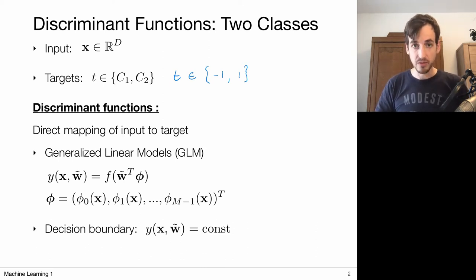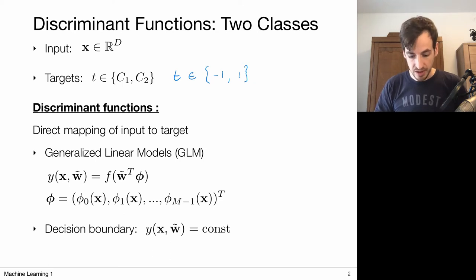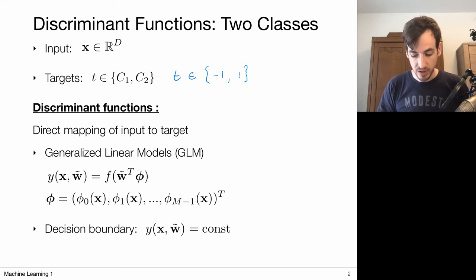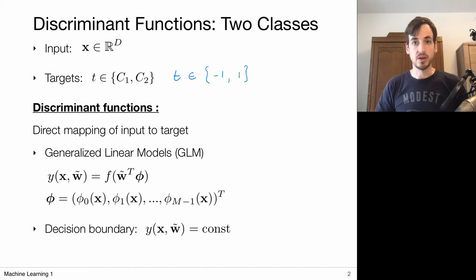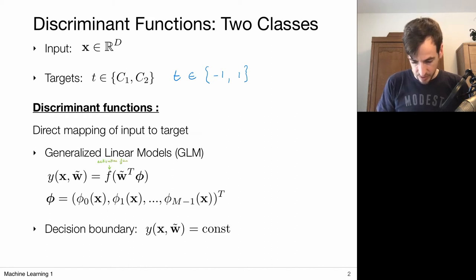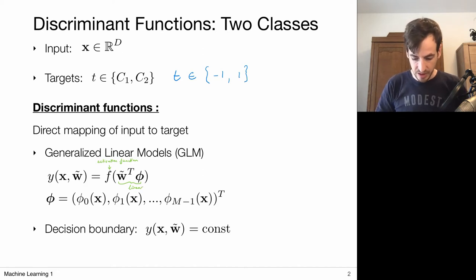We're going to define a direct mapping from the input to the corresponding target via discriminant functions — specifically via what we call generalized linear models. These generalized linear models consist of a linear component with respect to W. First we compute some feature vector for each input X using basis functions, so the model is linear with respect to W. Then we pull it through what we call an activation function, which gives us our prediction or output.